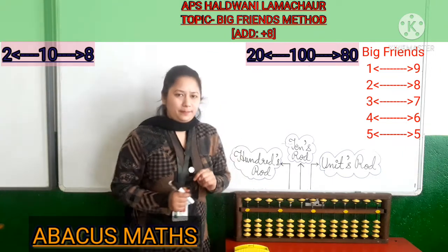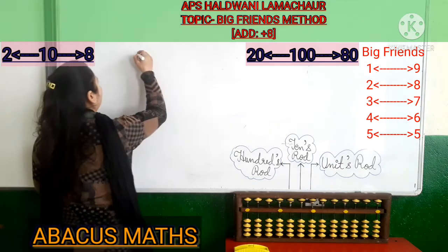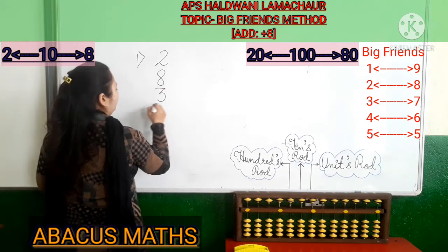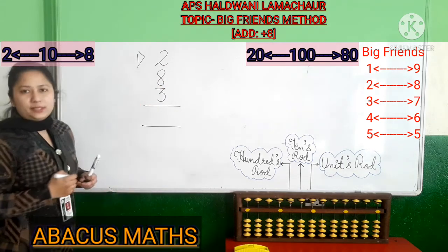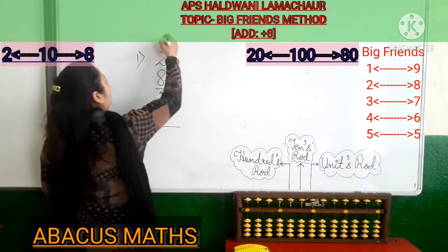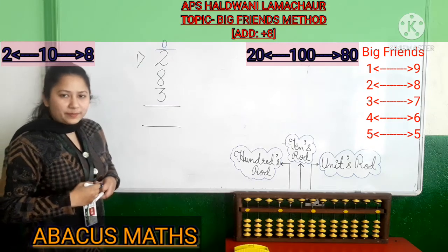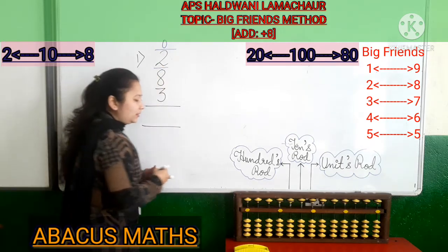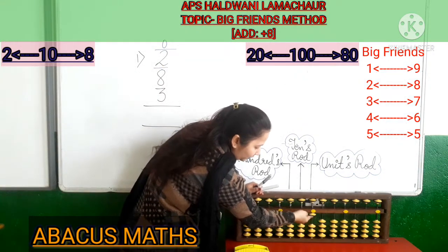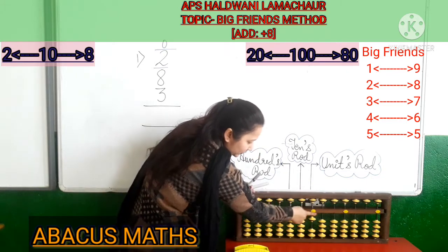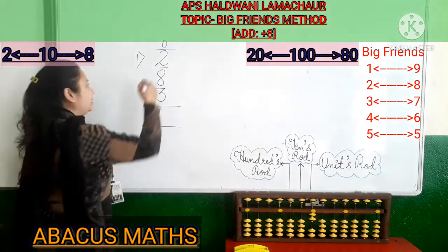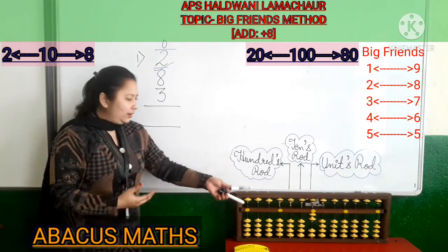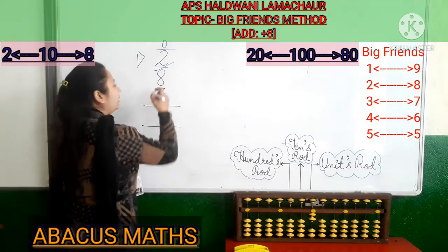Now kids, we will go to our first sum. This is a ones-rod sum, so it will go in the 1s rod. First of all, add 2. You can add 2 easily in the 1s rod: 1, 2. Now next we have to add 8.